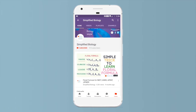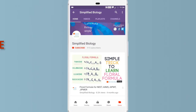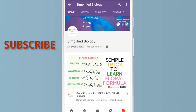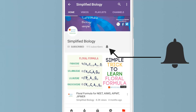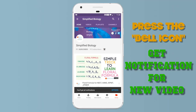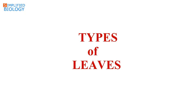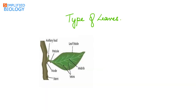Subscribe to Simplified Biology channel and press the bell icon to get notified when a new video is uploaded. Hello friends, welcome to Simplified Biology. Today's topic is types of leaves, from the chapter morphology of flowering plants.